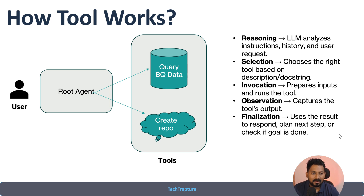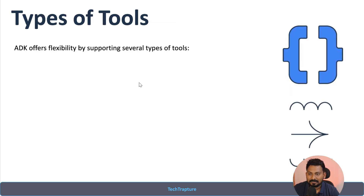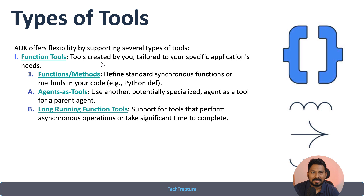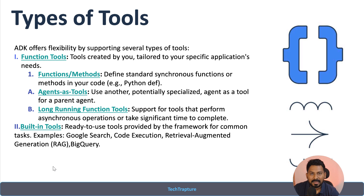Now let's see the different types of tools. There are various tool types offering flexibility. First are function tools — you can write your own Python or Java function. Within function tools you can also have agent-as-a-tool, meaning you can use another sub-agent as a tool, and there are also long-running function tools. Then there are built-in tools — for these you don't need to write any code, you just import them. Examples include Google Search, the code execution tool, Vertex AI Search, or BigQuery.